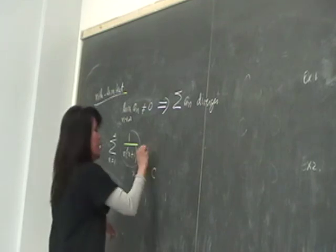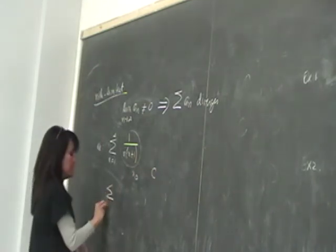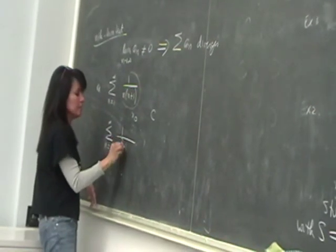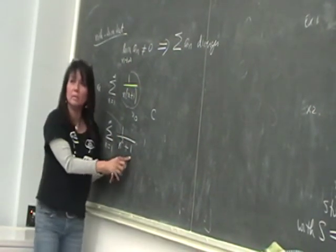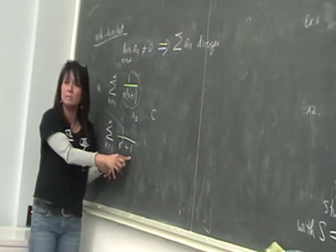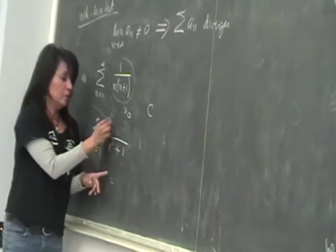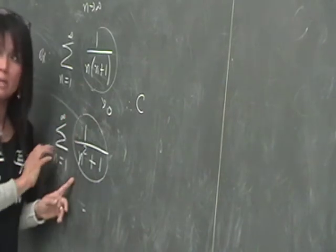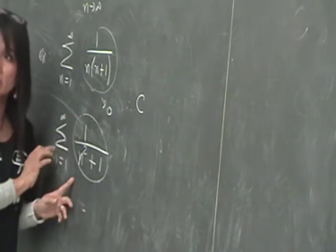On the other hand, if I have something like this, we haven't met this yet, right? 1 over N squared plus 1. You quickly eyeball the Nth term. So the Nth term, you notice I'm just looking at this, right? Without the series notation, the summation notation.